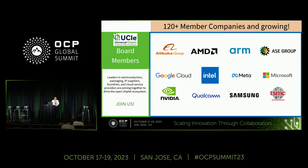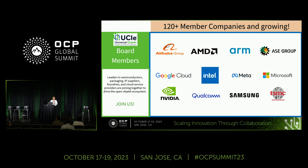We started UCIE in March of 2022, which was last year. We incorporated in June. We started with 10 promoter member companies. Right now we are at north of 130 members. These are the 12 board members, and a lot of exciting things are happening in terms of getting the industry effectively rallying around UCIE as the common standard on which everybody develops chiplets.